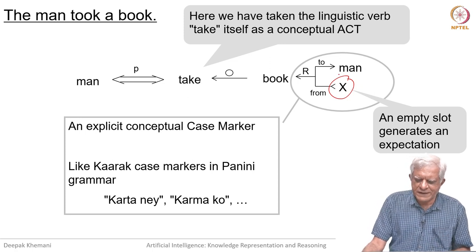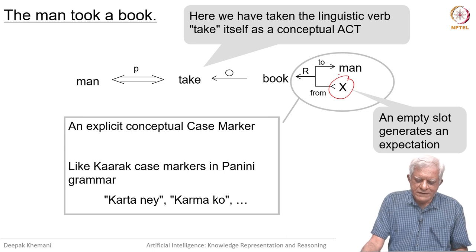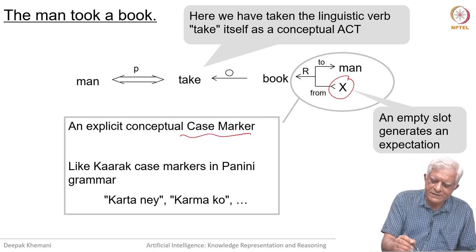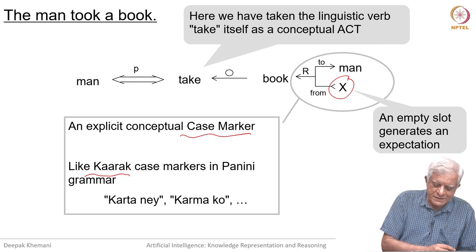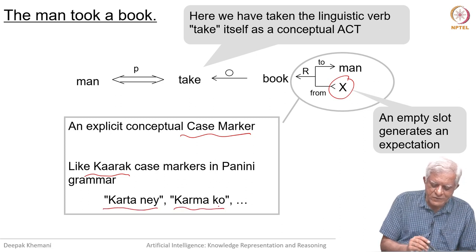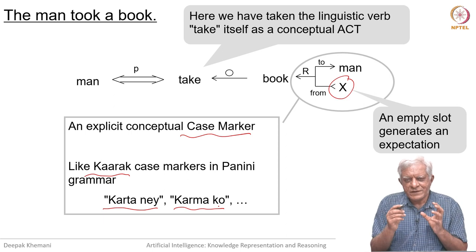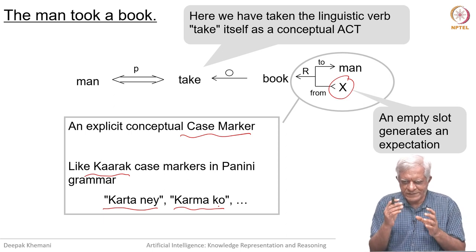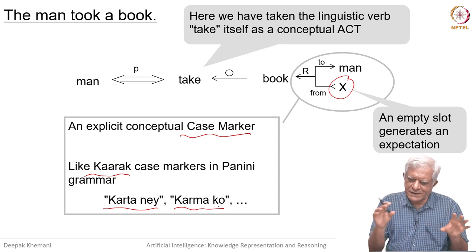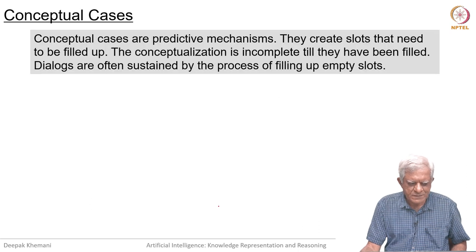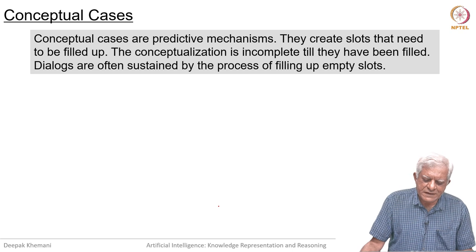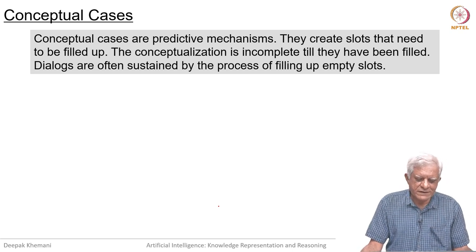We have taken the linguistic word 'take' here, but we will move away from that. This recipient slot is like an explicit case marker — as I may have mentioned earlier, in our grammars, in the Panini grammar, we have Karak: Karthane, Karamko, and so on, which tell you what role an element plays in the larger sentence, which may be an event.